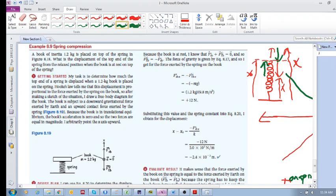It's placed on top of the spring. What is the displacement of the top end of the spring from the relaxed position when the book is at rest on top of the spring? So what is the x minus x₀? That's what we're looking for.